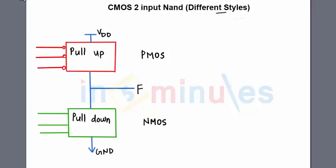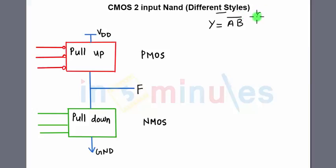Here we'll start with the static CMOS style. The first thing we saw with an inverter when implementing a static CMOS circuit was that we need to write down the expression and the truth table. Here I want to teach you a shortcut trick. The shortcut trick is: whatever expression is given — in this case Y equals AB-bar.